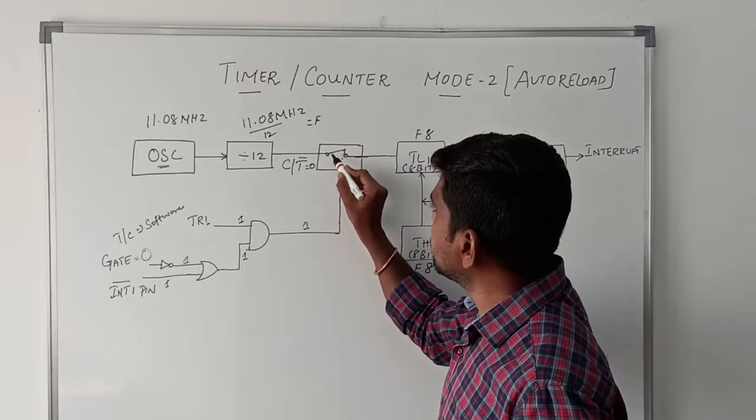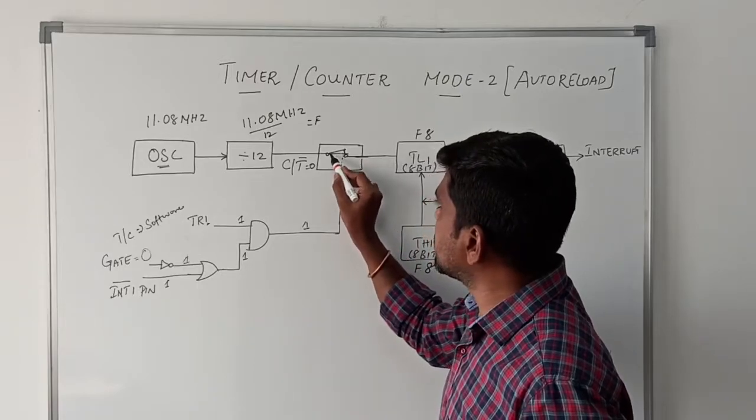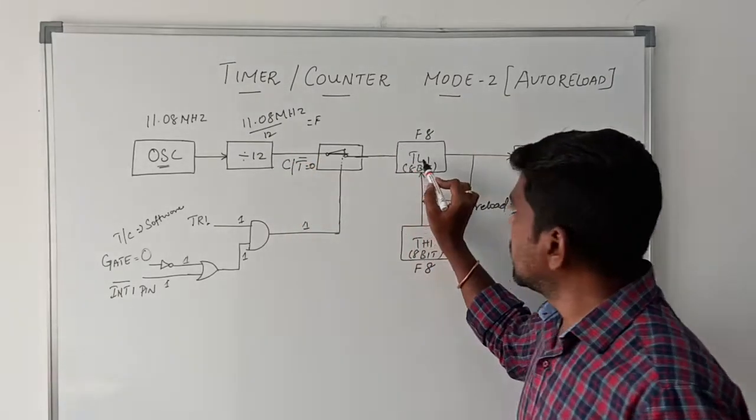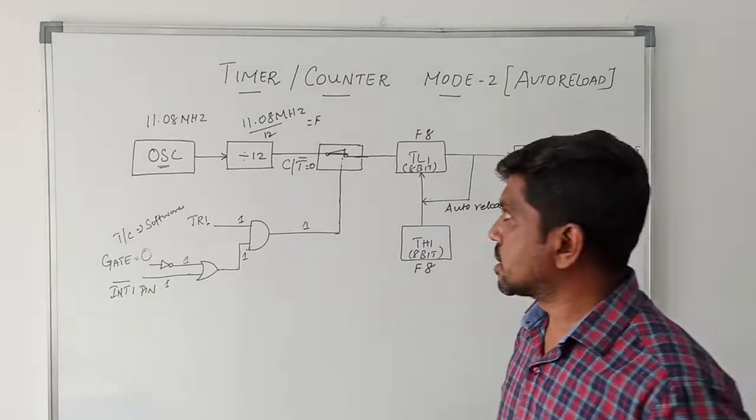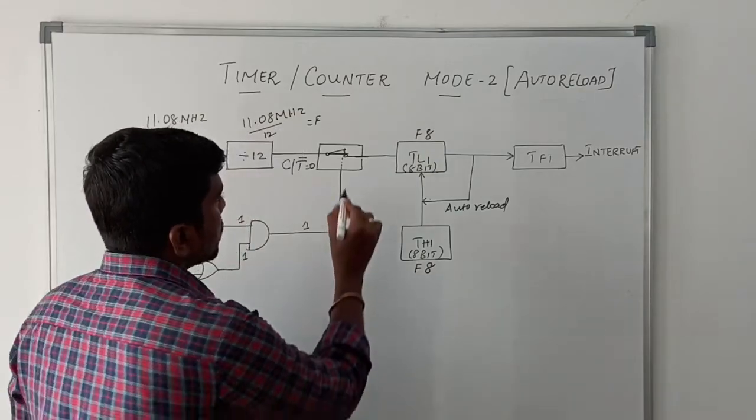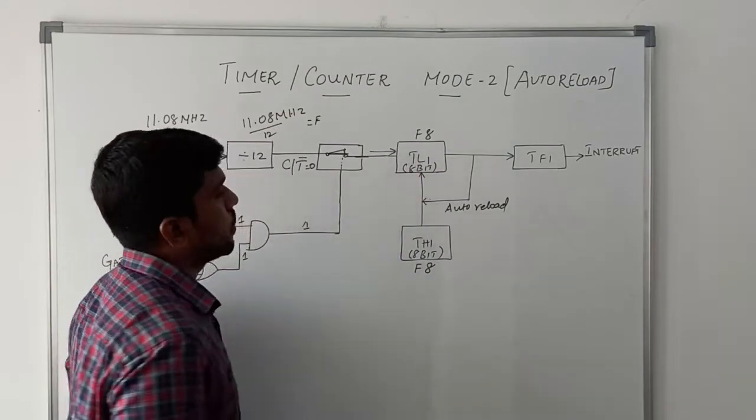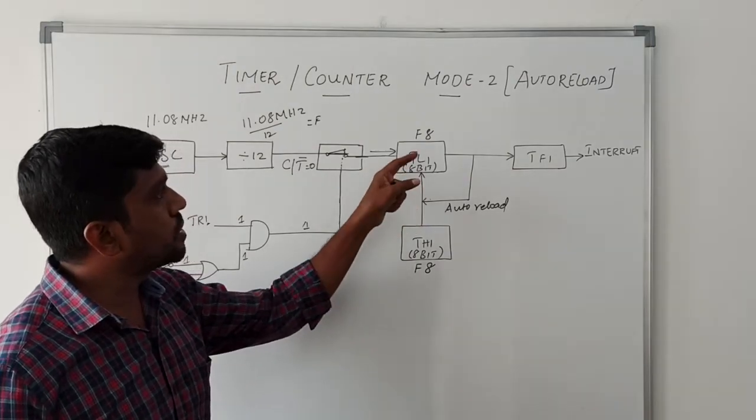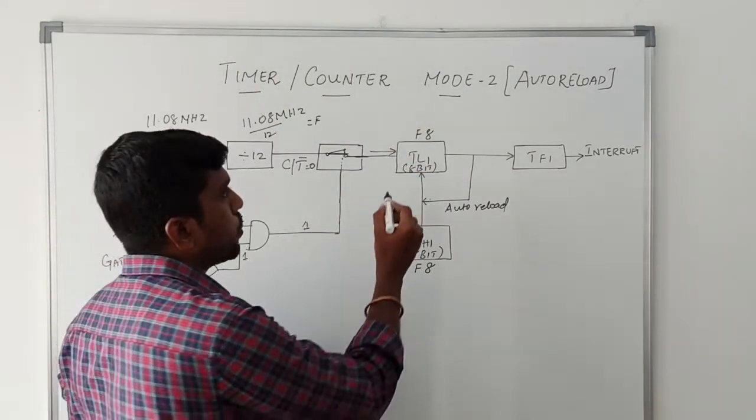The input of the AND gate, both inputs are 1, so the output of the AND gate is 1. Now the frequency is entering the TR1 register. Whenever the frequency is entering the TR1 register, it automatically increments by 1.